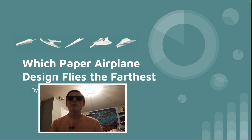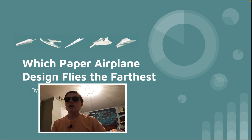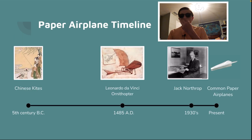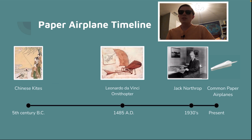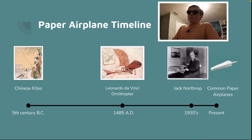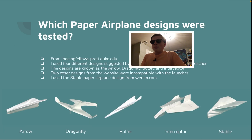I actually had multiple independent variables — things I was changing — but I was changing them at different times so I could test for multiple different things. On the paper airplane timeline: Chinese kites were in 5th century BC, Leonardo da Vinci's ornithopter was in 1485, Jack Northrop's common design for the paper airplane was made in the 1930s, and then today is just the common one as we know it, popularized for children.